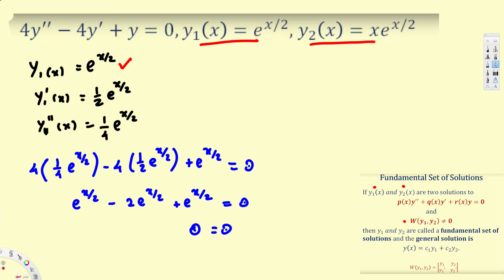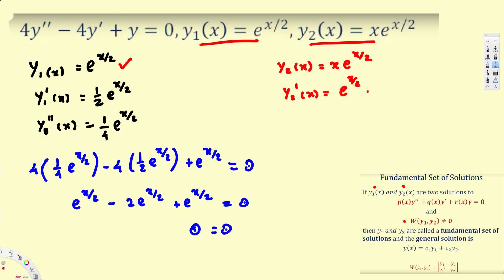Now let's verify the second solution y2(x) = x*e^(x/2). To find its first derivative we apply the product rule and chain rule since we have two functions of x. The derivative of x gives 1, keeping e^(x/2) as is, plus keeping x and taking the derivative of e^(x/2) giving (1/2)x*e^(x/2). So y'2 = e^(x/2) + (1/2)x*e^(x/2).